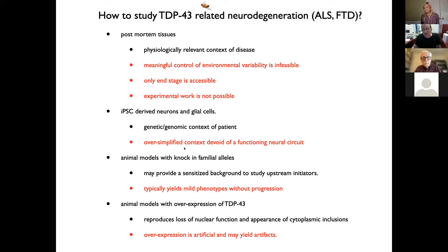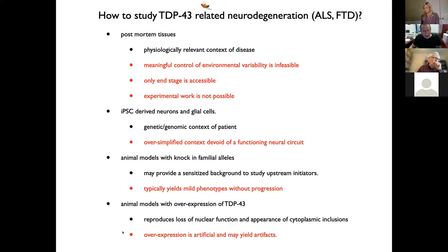Animal models with knock-in familial alleles may provide a wonderful opportunity to sensitize a genetic background in order to reveal upstream initiators, but these approaches typically yield mild phenotypic effects that don't lead to progression. And then there are overexpression models, which are robust and reproduce the loss of nuclear function of TDP-43 and can reproduce the appearance of cytoplasmic inclusions, but they are a bit artificial and may yield artifacts. With that context, I'm going to tell you about an animal overexpression model in fruit flies.